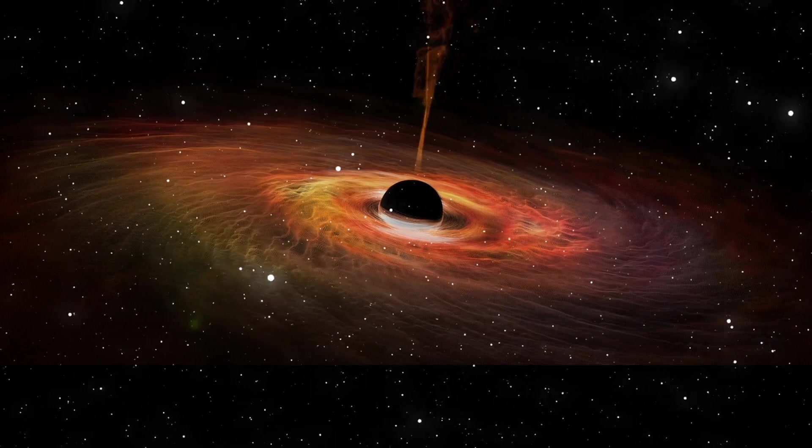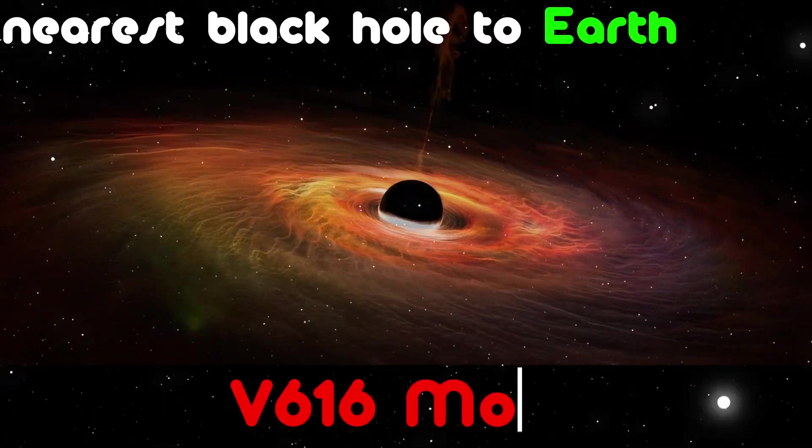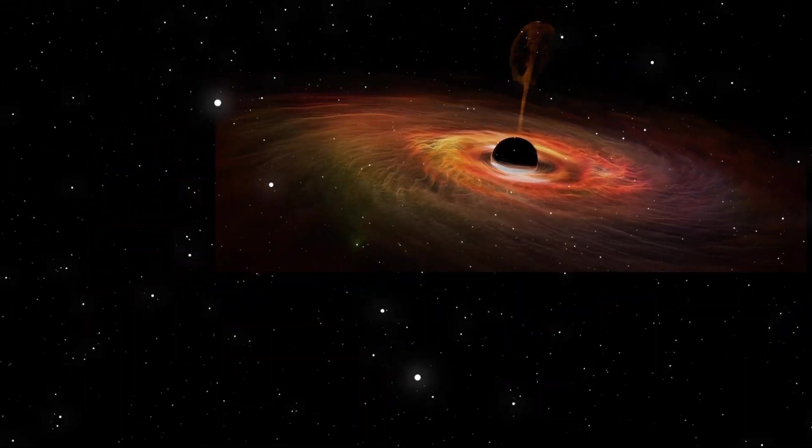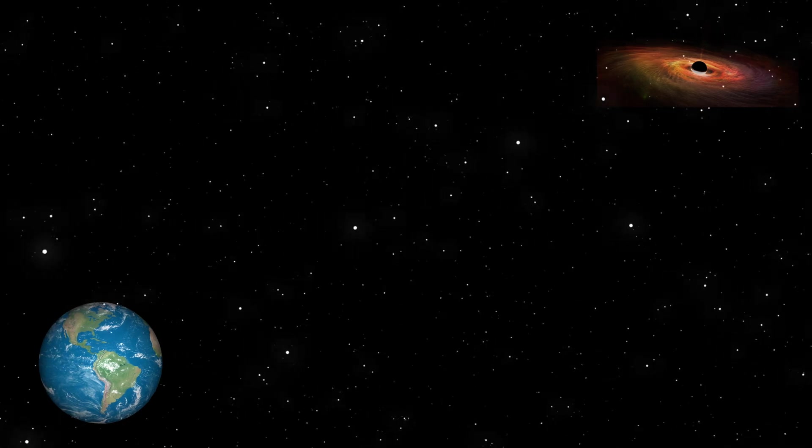Now, let's talk about the nearest black hole to Earth. It's called V616 Monocerotis. It is about 3,000 light years away from us, which is quite far. It won't affect our planet, so no need to worry.